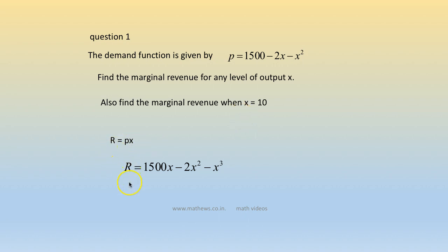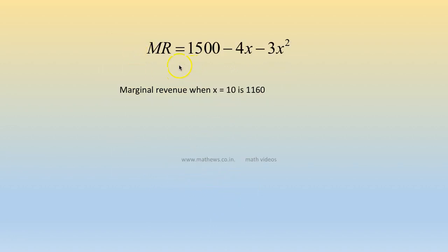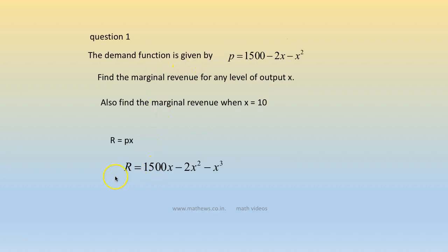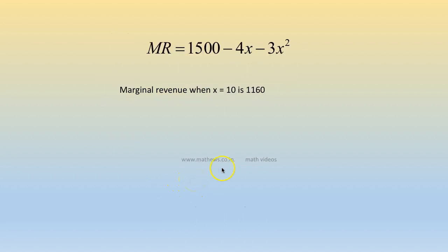Revenue r = px, so r = 1500x - 2x² - x³. Marginal revenue is the derivative of total revenue, which gives 1500 - 4x - 3x². The marginal revenue when x = 10, substituting, gives 1160.